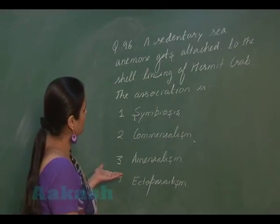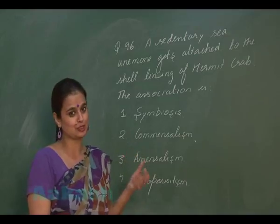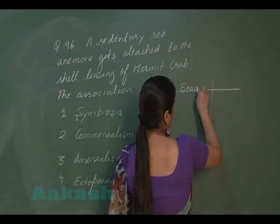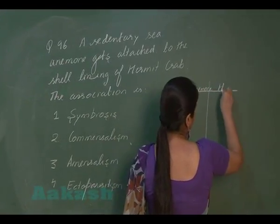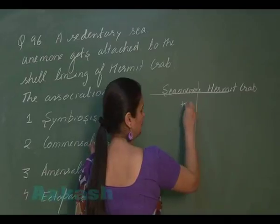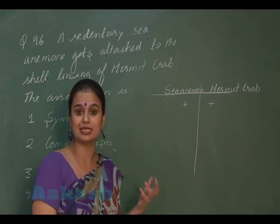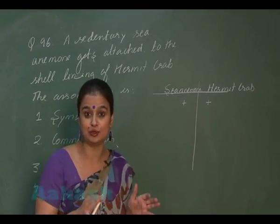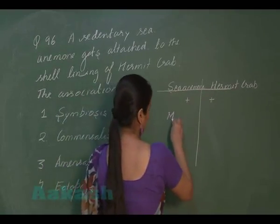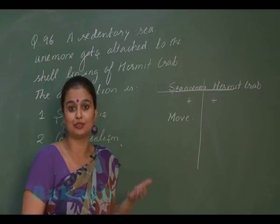In question 96, we have to find what type of association exists between the sea anemone, which is attached to the body of a hermit crab. Both the sea anemone and hermit crab are benefited. The sea anemone is sedentary, so due to attachment with the hermit crab it gains movement. Additionally, food availability and resources for the sea anemone increase.